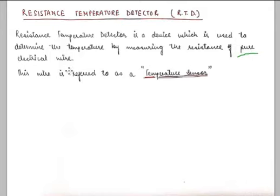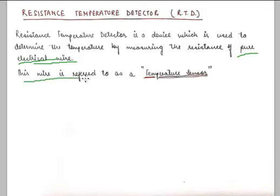The key feature of an RTD is that the sensor does not involve any complex construction. On the contrary, it is a simple pure metallic wire used to detect the temperature of a given scenario. We are exploiting its property of exhibiting a change in resistance whenever it experiences a change in temperature.